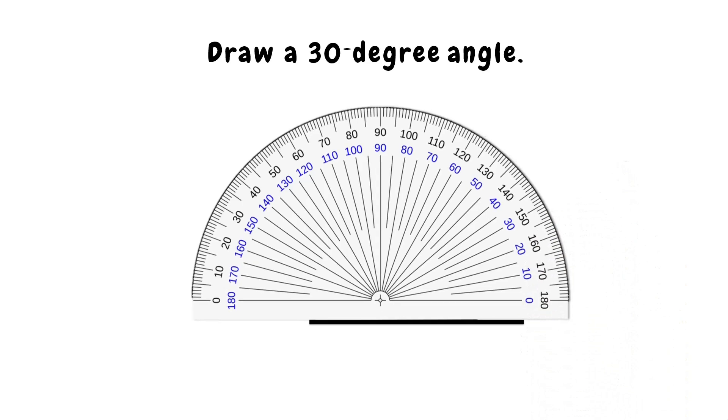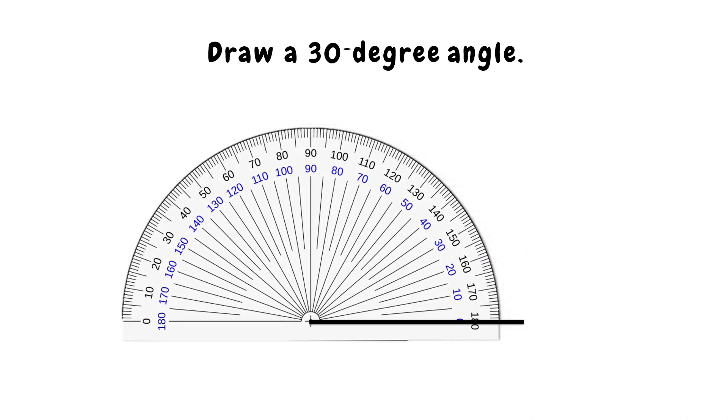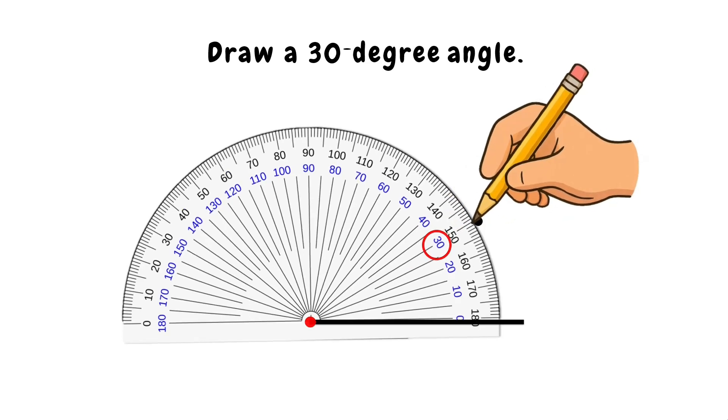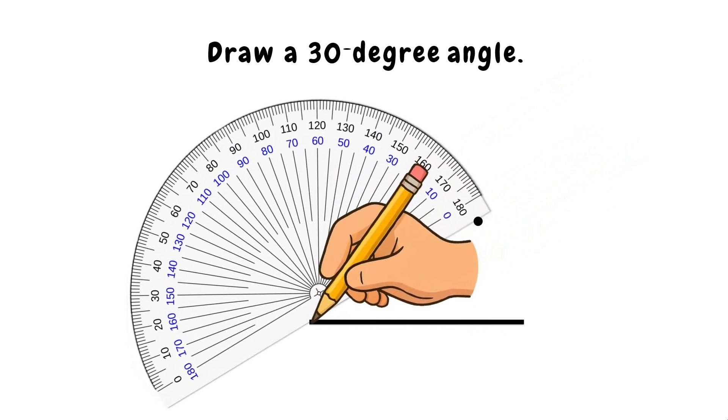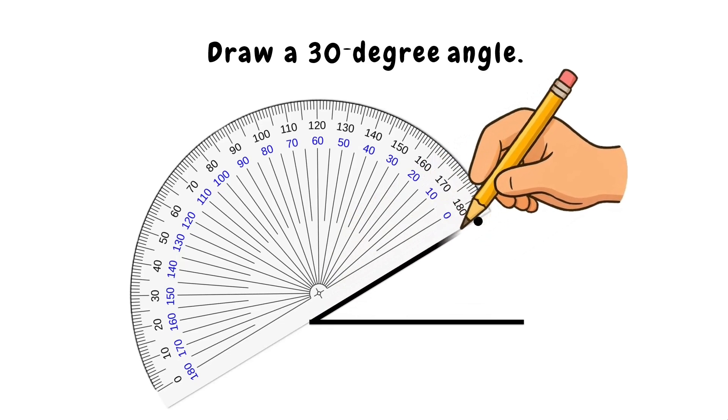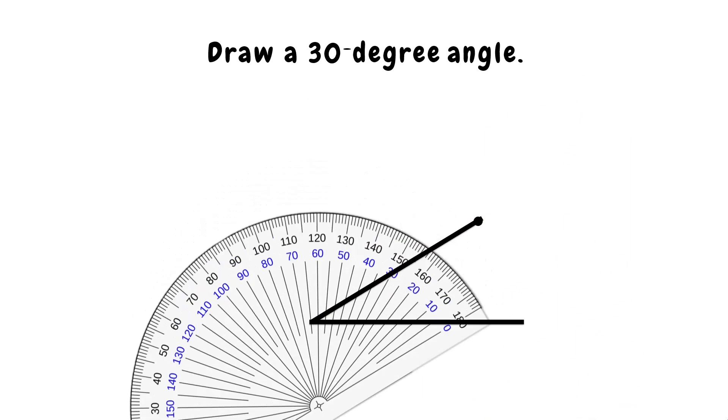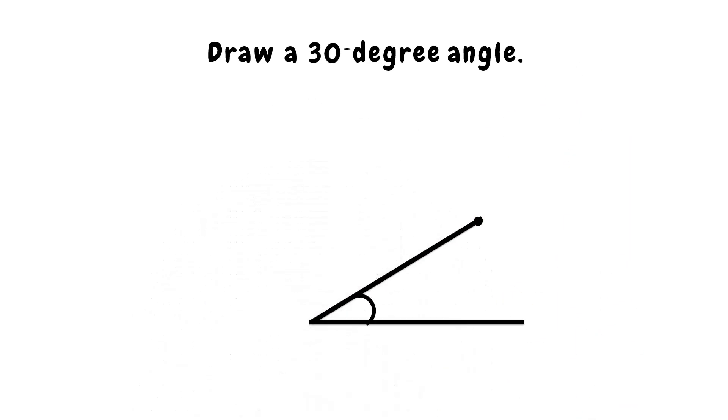Next, place the protractor on the end point of the ray with one side pointing at 0 degrees. This time, you can see that I am using the inner scale. Now, let's find and mark 30 degrees. Then, draw a second ray connecting the dot to the end point. There you go! We now have the 30 degree angle.